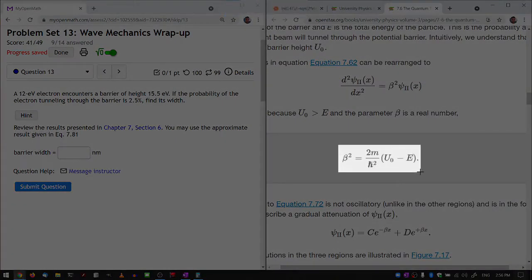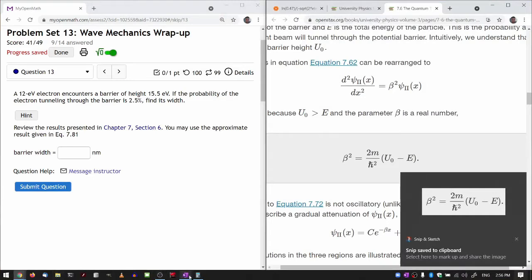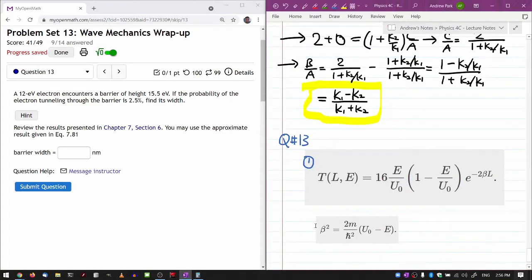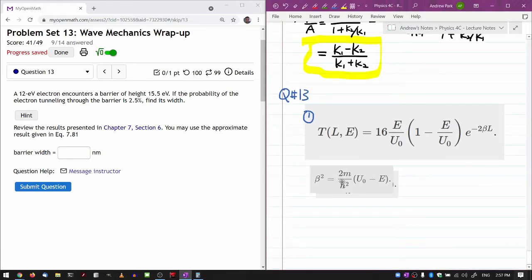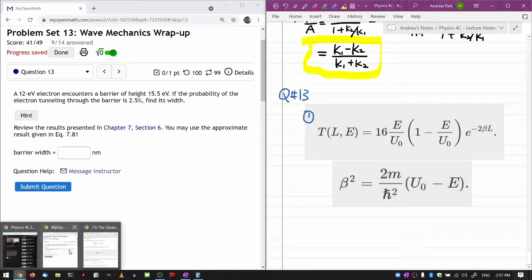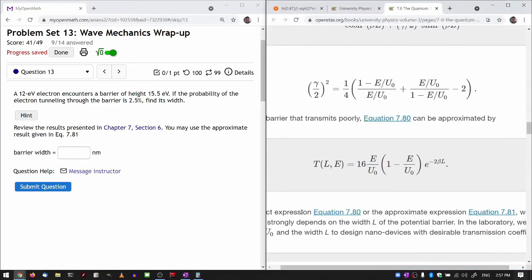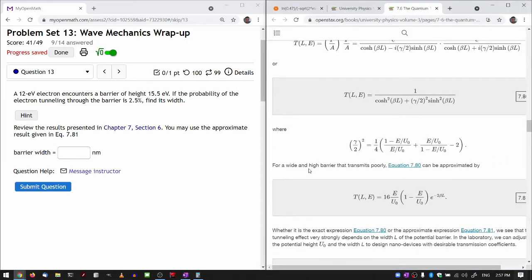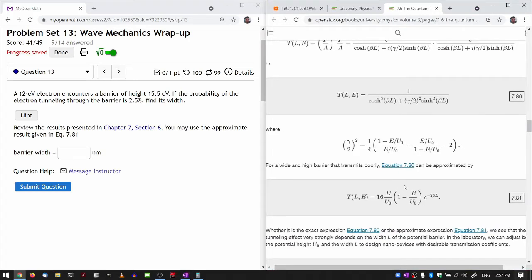Once you have that, then you have everything you need to solve for what they are asking for. They are asking for the thickness of the barrier, which would match the tunneling probability. That's T(L,E). This is the tunneling probability. And I think we can use this one. 2.5% is low enough that this approximation is probably valid.